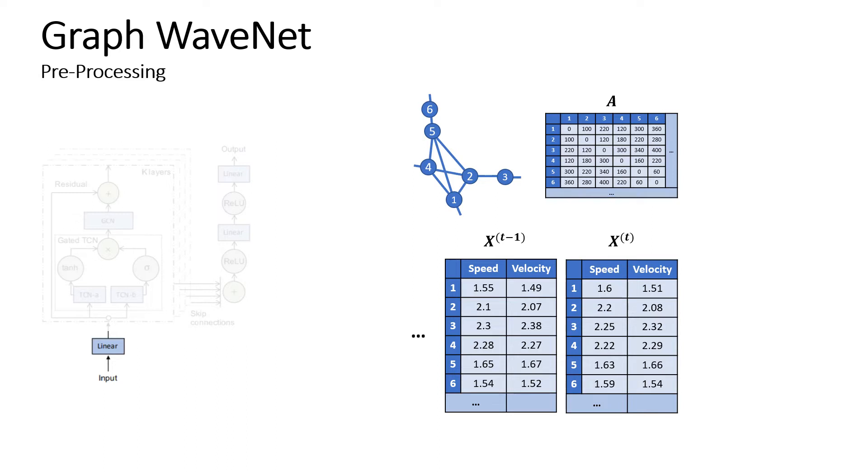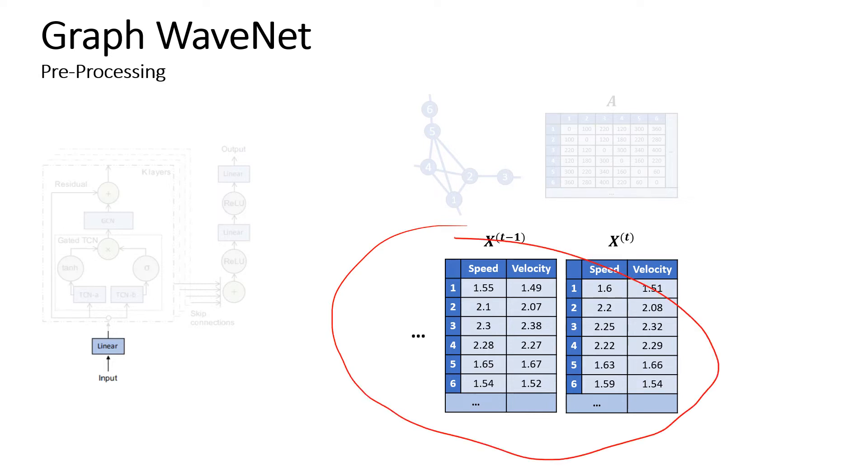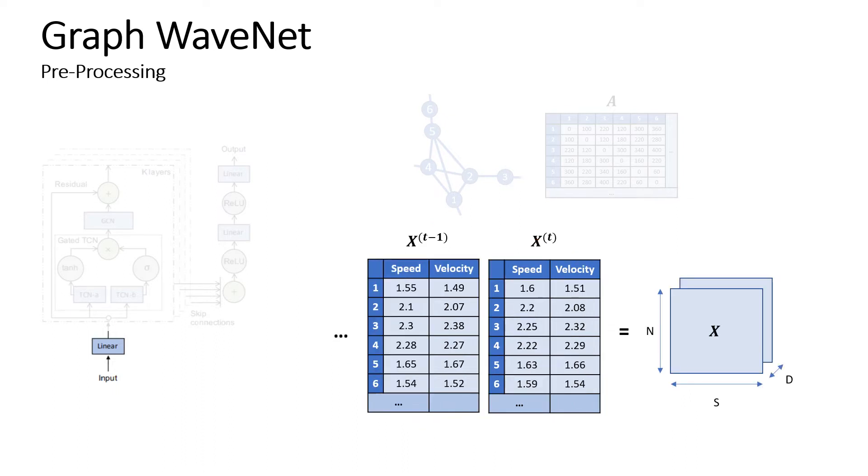Here's what a single input looks like for our model. We have a set of nodes and edges, an adjacency matrix, and a set of time series data for our node features. During the first phase of the model, we're only concerned with capturing temporal dependencies. So we're only really going to be working with our time series data. From this point on, we will consider this time series data as just an n by s by d tensor, where n is the number of nodes, s is the number of time steps, and d is the number of node features, which in our case is 2, speed and velocity. But the model is built to handle any value for d.